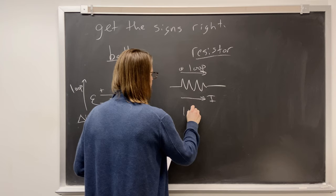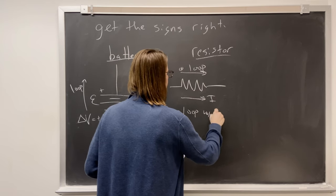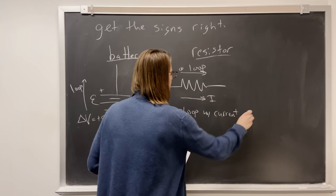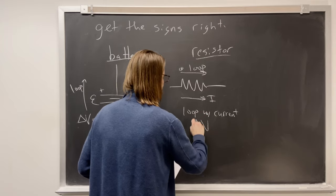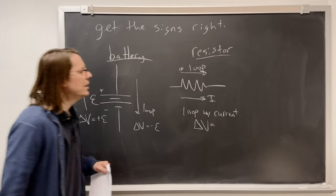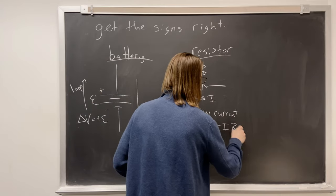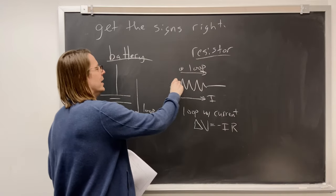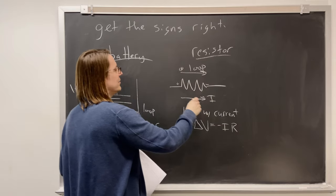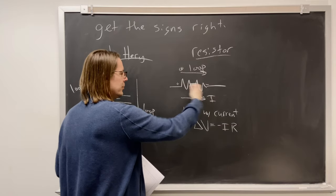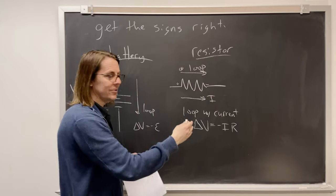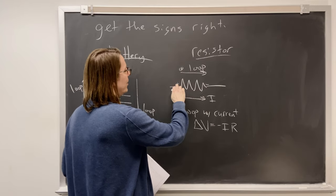So if you loop with the current, then what is the potential going to be? It's negative IR. Negative IR. Because we know that this tends to be the positive side, the negative side, the potential always drops with the current flow because it's dissipative. Okay, so you're going from high to low.